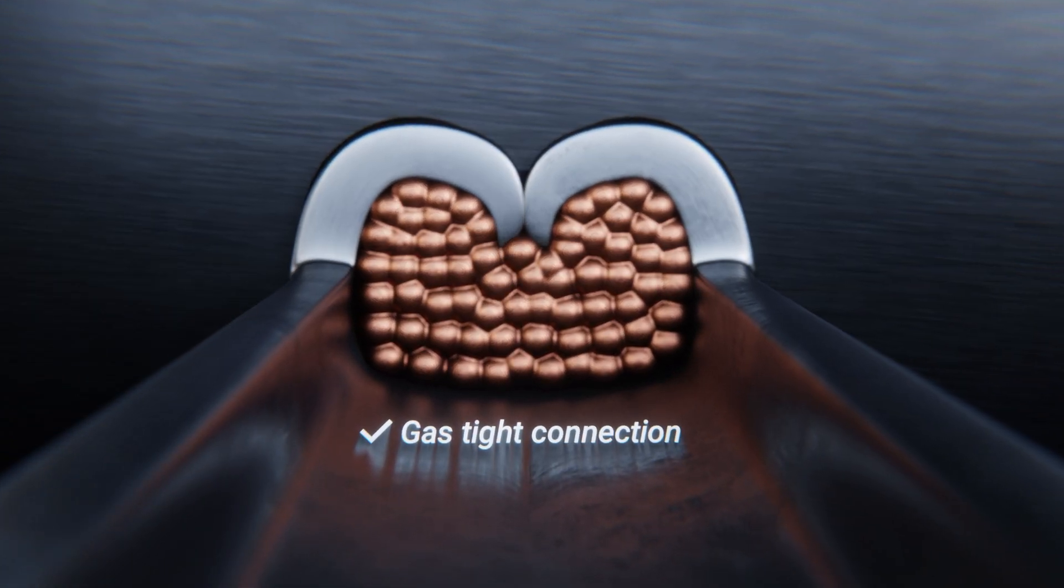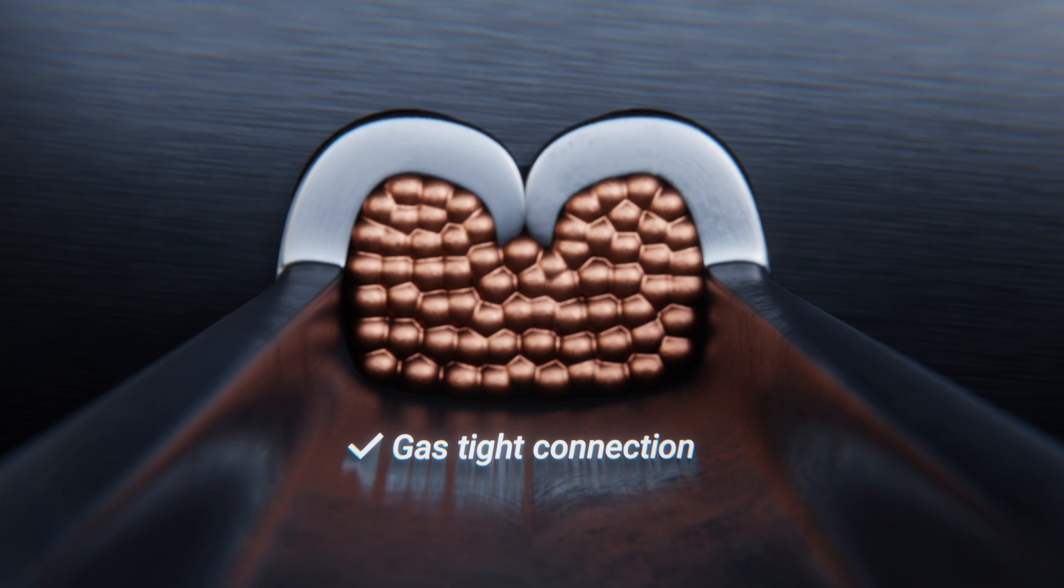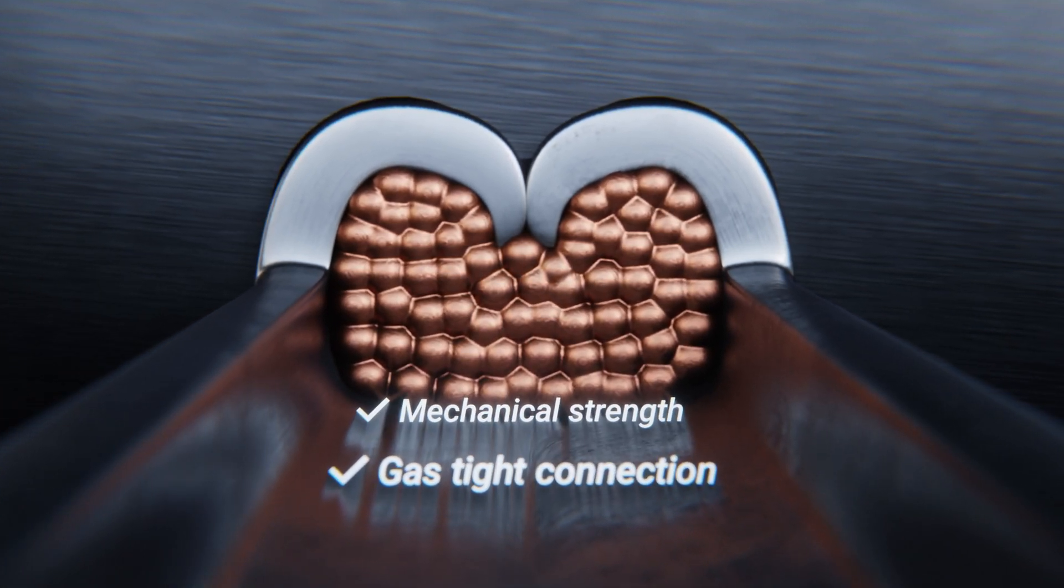Crimping is creating a gas-tight electrical connection. This transmits current with minimal resistance while providing mechanical strength.